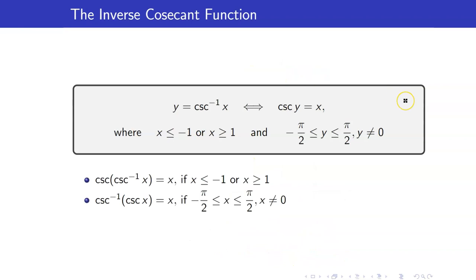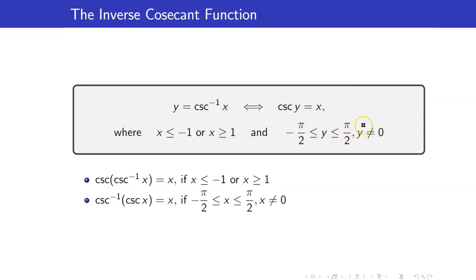Here is the definition of the inverse cosecant function: y is equal to cosecant inverse x if and only if cosecant of y equals x. The domain is negative infinity to negative 1, union 1 to infinity. The range is negative pi over 2 to pi over 2, but y cannot equal 0. We again have cancellation rules here.